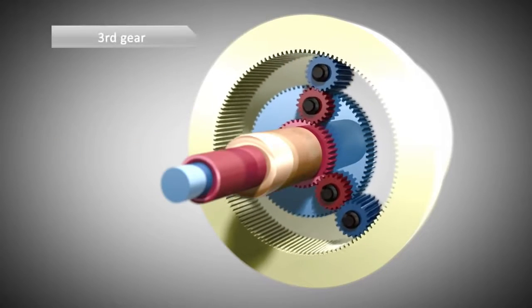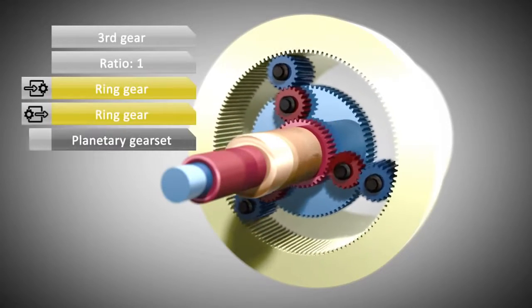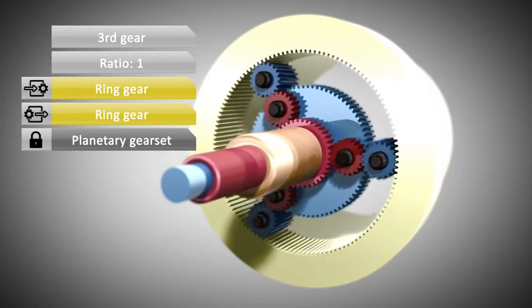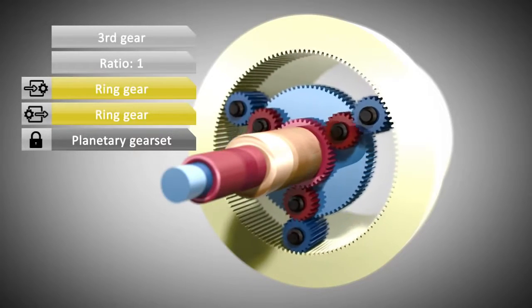In 3rd gear, a gear ratio of 1 is accomplished by locking all relevant poles of the planetary gear set. Now, the whole planetary gear set is rotating.